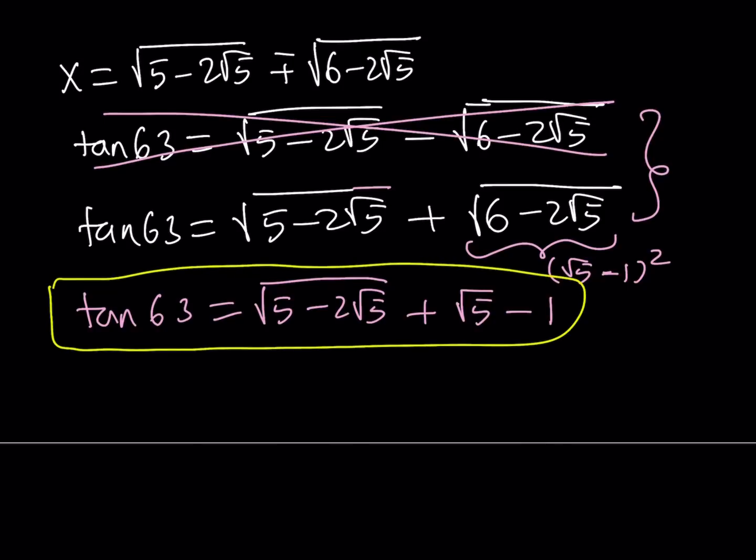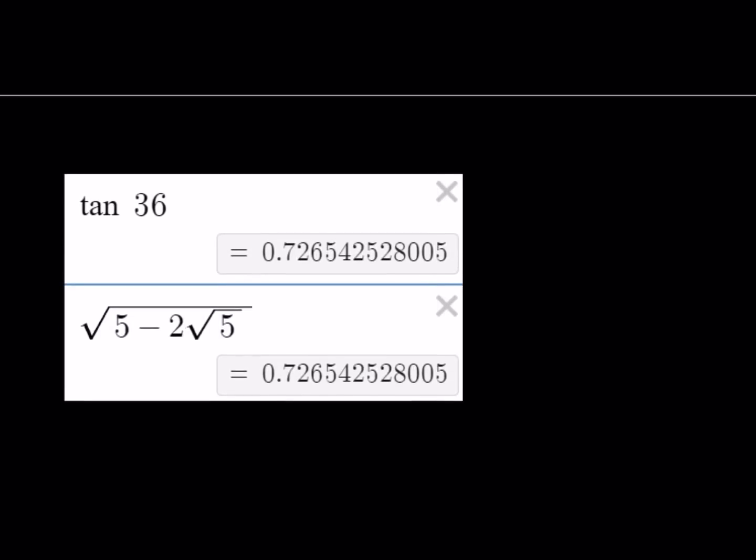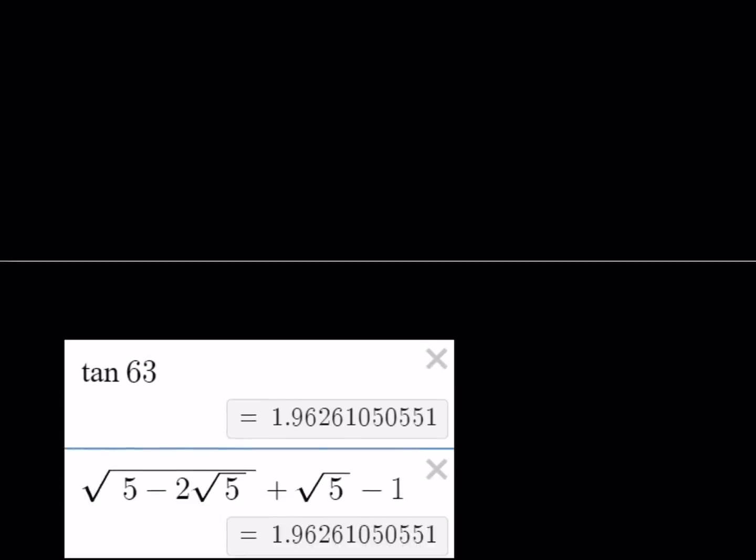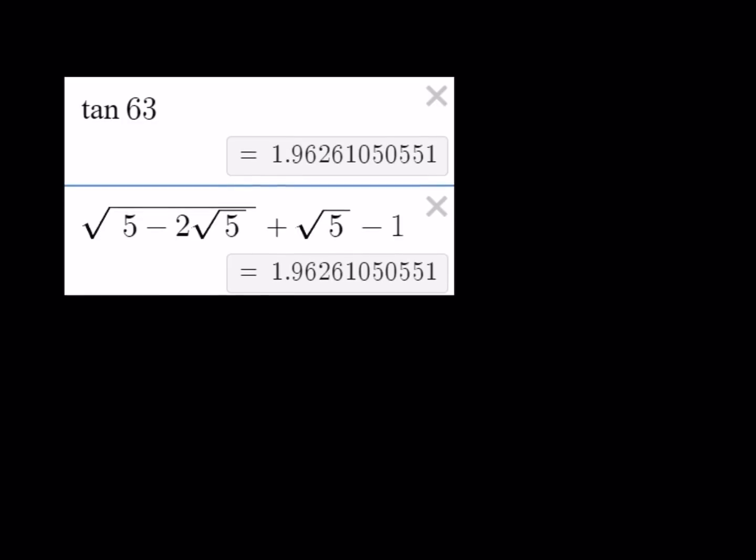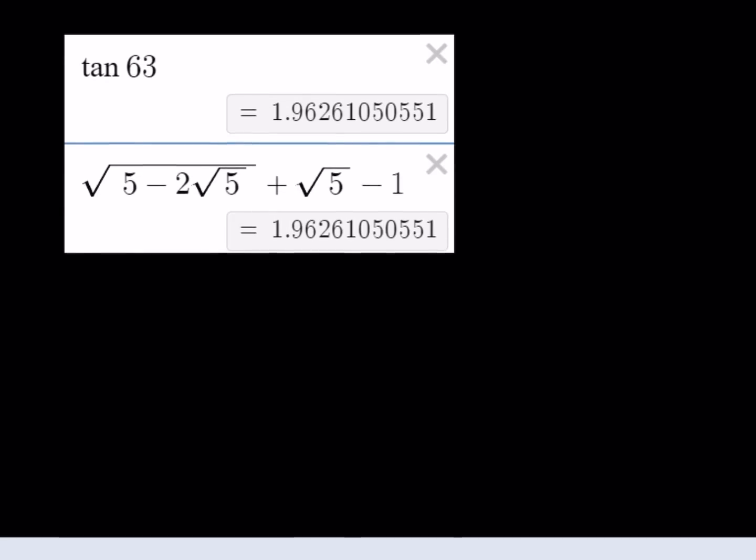Now, I'm going to show you a couple things before we leave. Here's one. Tangent 36, you can safely see that it is equivalent to square root of 5 minus 2 root 5. And, the value of tangent 63, as found here in the calculator, is the square root of 5 minus 2 root 5 plus root 5 minus 1.